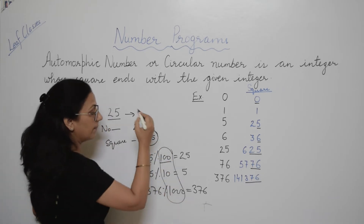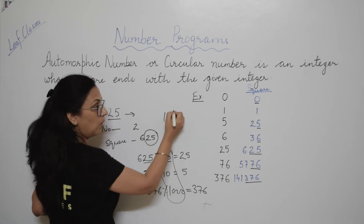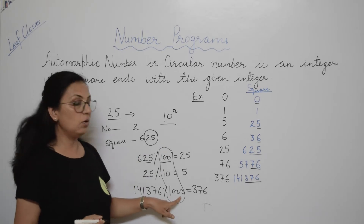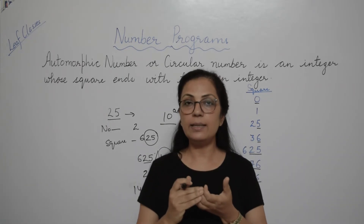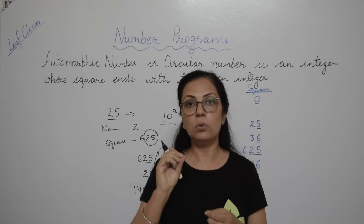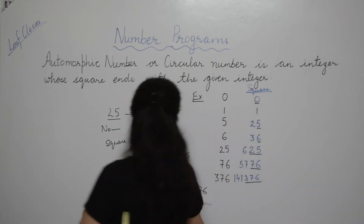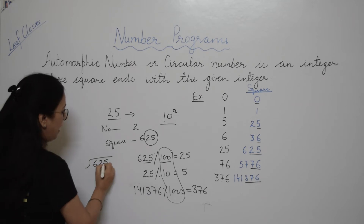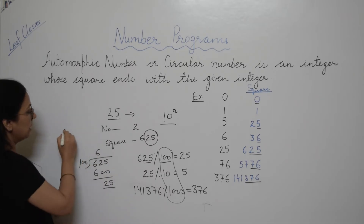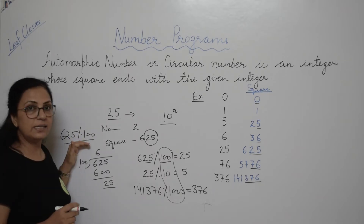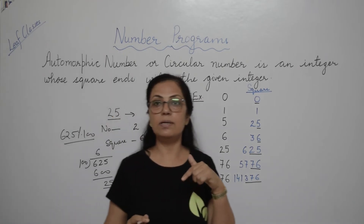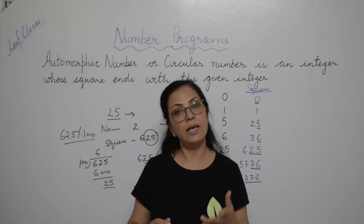So how are we calculating this divisor? It is 10 to the power of the number of digits. If the number of digits is 1, then 10 to the power 1 gives 10. 10 to the power 3 gives 1000. So the logic is simple: calculate the total number of digits, then use the modulus operator, which gives you the remainder. We will use the same concept for counting digits that we have used in many programs. Let's start with the program.